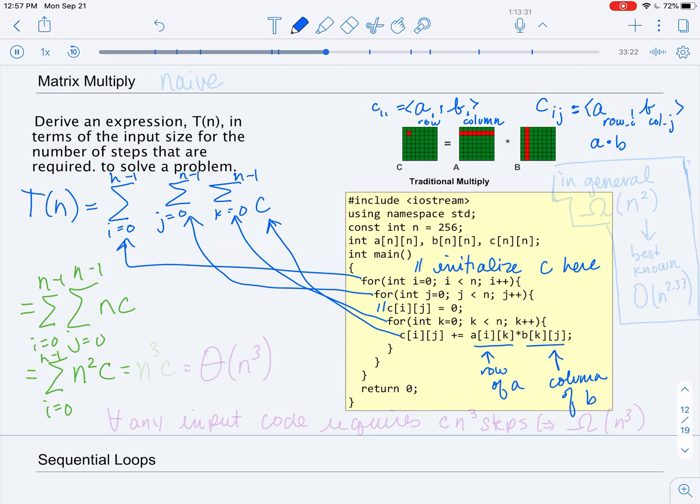And now, for the i indexed summation, we are going to be adding n squared times C, so we are going to get n cubed times C.